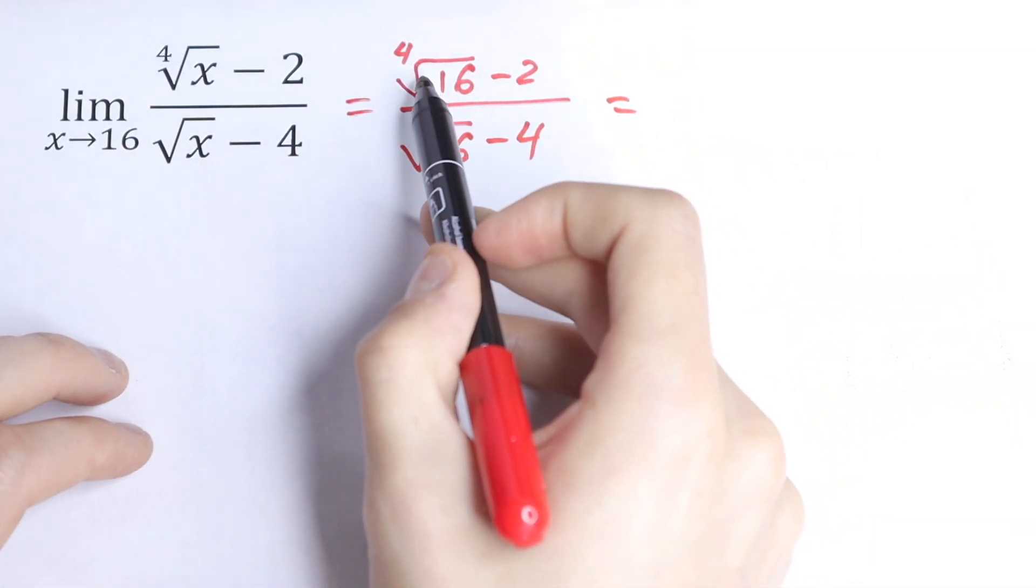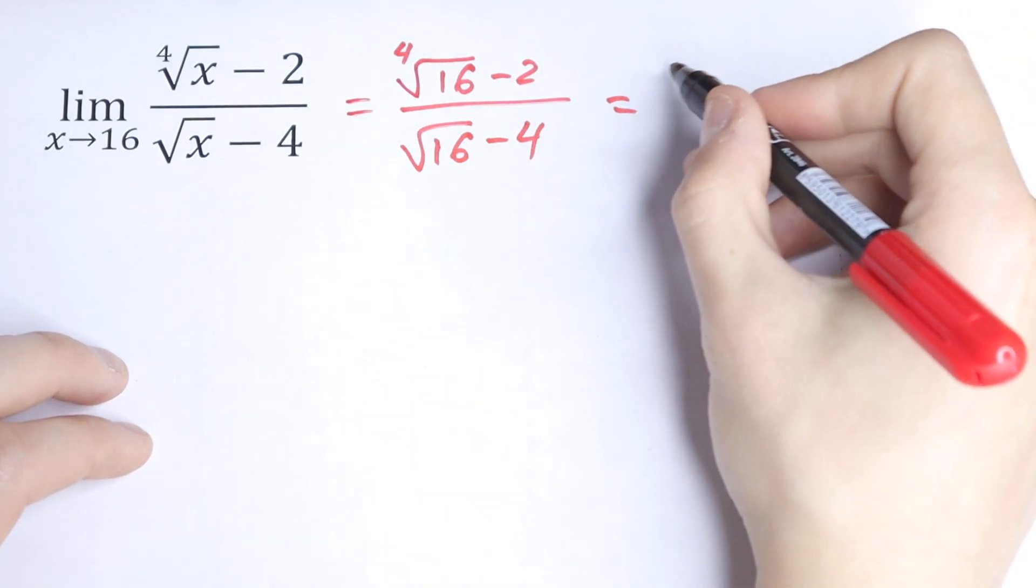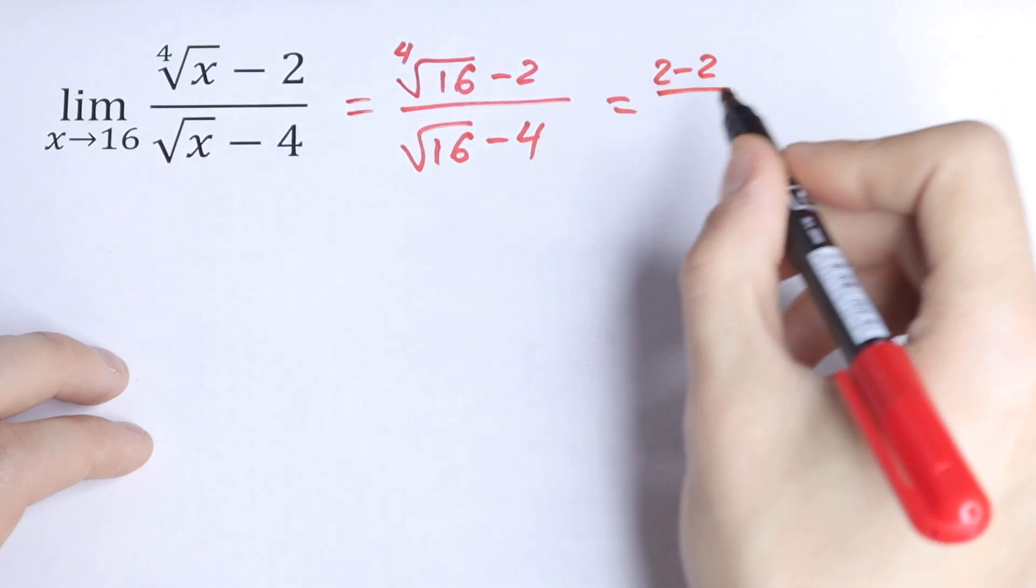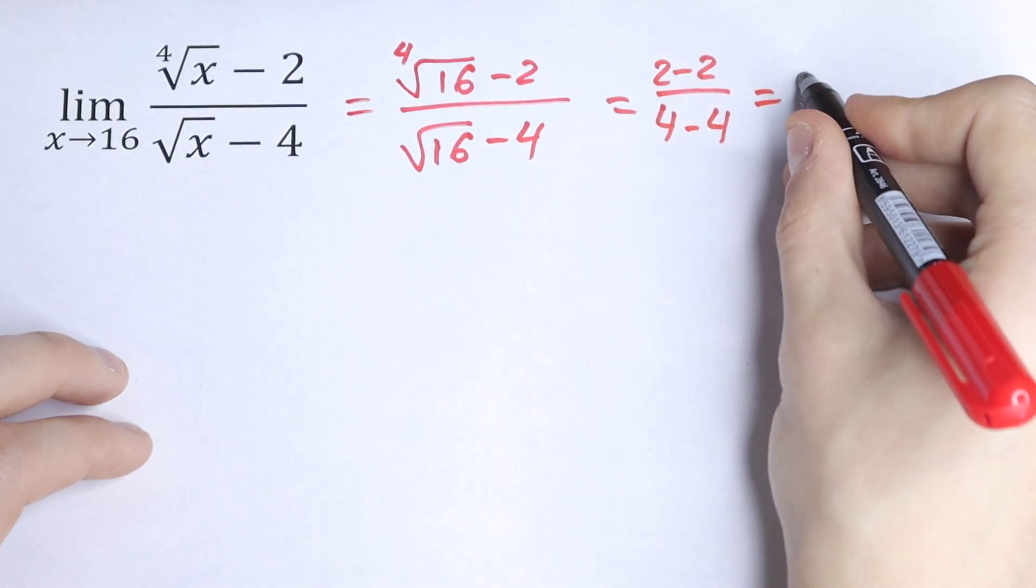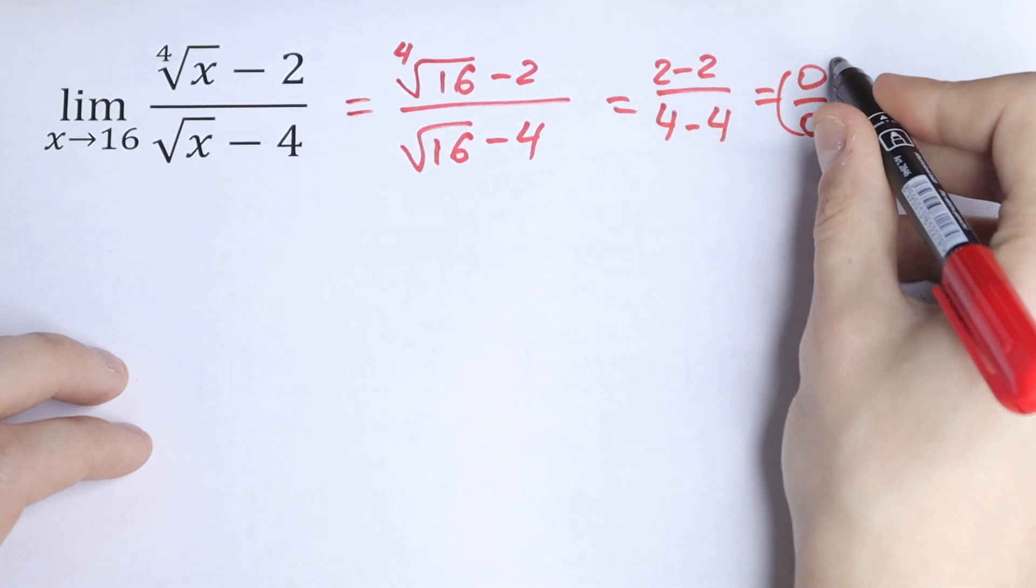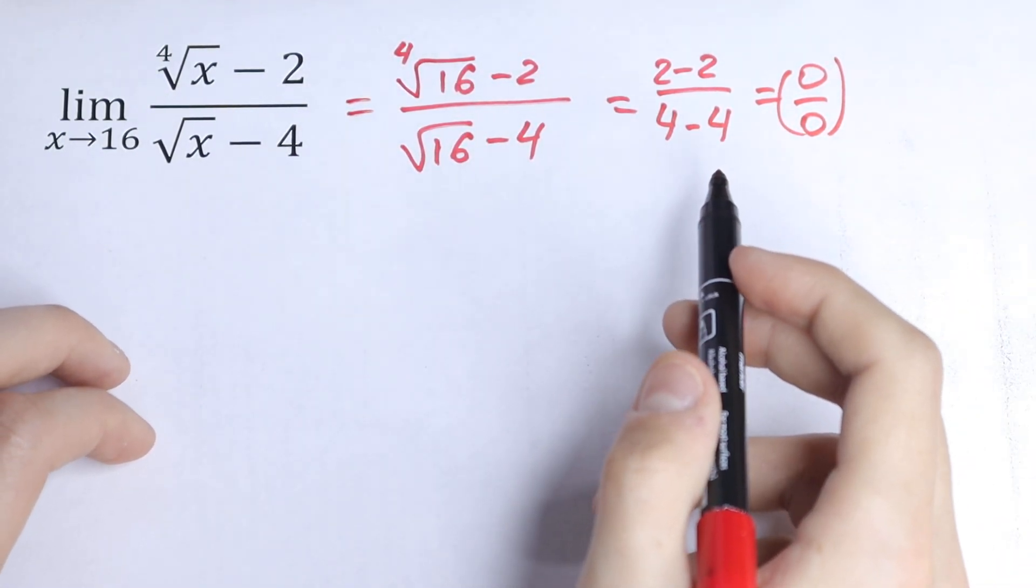We will have 4th root of 16 will be 2, so we have 2 minus 2 all over 4 minus 4. As a result we will have 0 over 0. 0 over 0 is undefined, so we don't know what the value is.